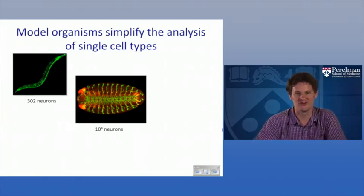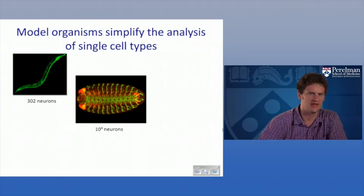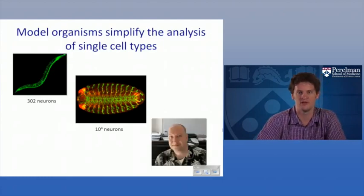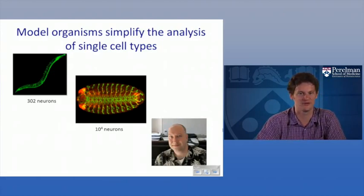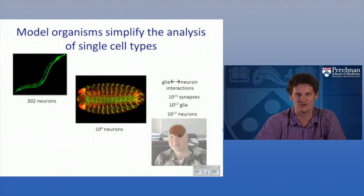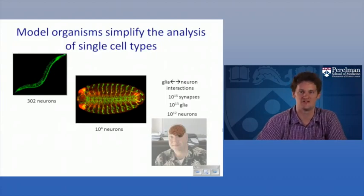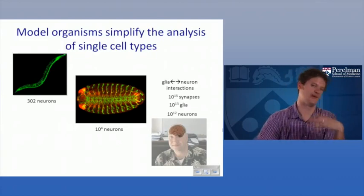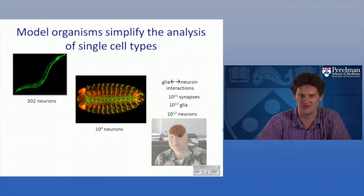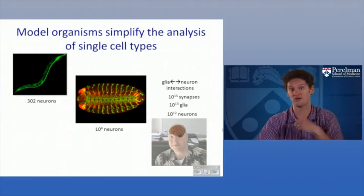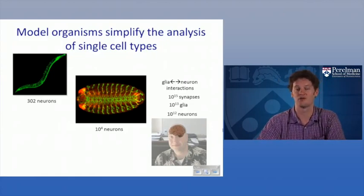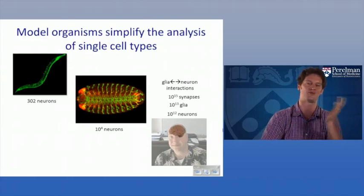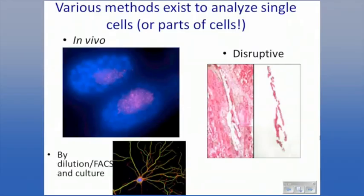There are about 10,000 neurons in this fly larvae — a fairly complicated nervous system, nothing compared to our nervous system. My eminent co-instructor John Hoganish's brain has something like 10^12 neurons, 10^13 glial cells, and 10^15 synapses, with incredible interactions between glia, synapses, and neurons. There are distinct neurons because of different locations in the brain or distinct molecular identities, giving rise to the complex behavior that allows John to give a lecture for this course, as my worms could never.